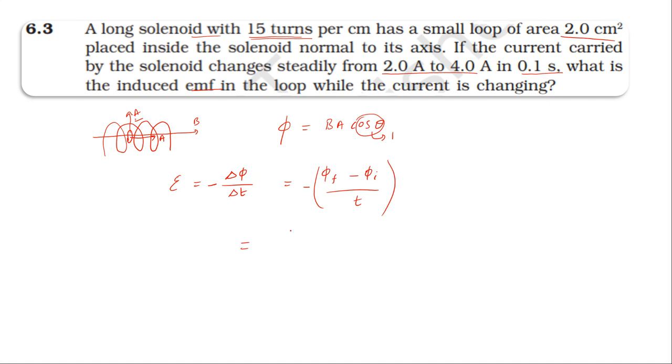Taking the magnitude, EMF equals initial flux minus final flux by time taken. The flux formula is B·A. Since B = μ₀nI, we have μ₀ and n as constants.